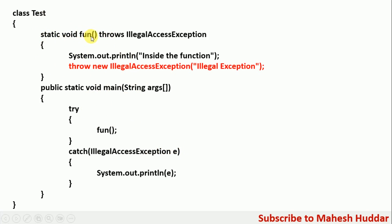Because this particular method is going to throw an exception explicitly, we listed it with the help of the 'throws' keyword while defining the method. And within this method, we have thrown an exception called IllegalAccessException explicitly. Because we threw an exception in this method, we have to have a try-catch block wherever we call it.